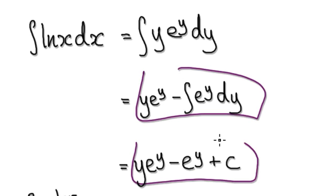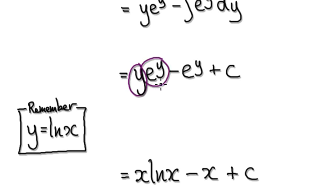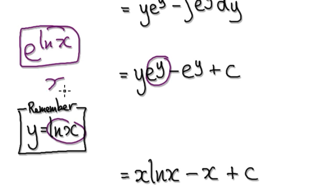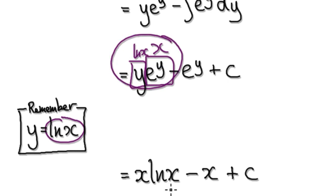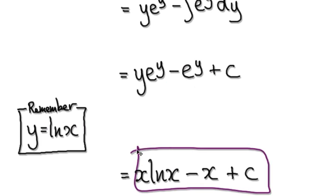Now substitute back. We said y equals natural log of x. Looking at the expression: y times e to the y — e to the y is x, and y is natural log of x — so that term becomes x times natural log of x. The final term, negative e to the y, becomes negative x. So the final answer is x times natural log of x minus x, plus C.